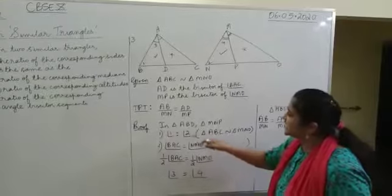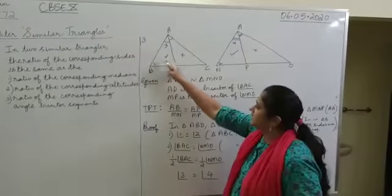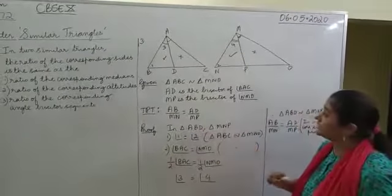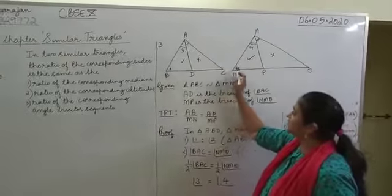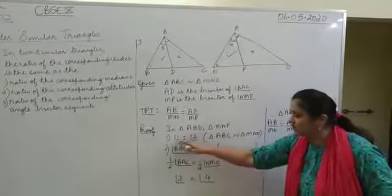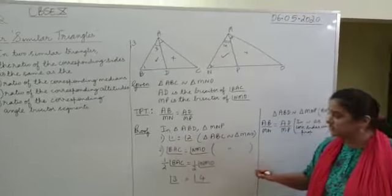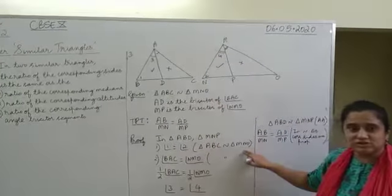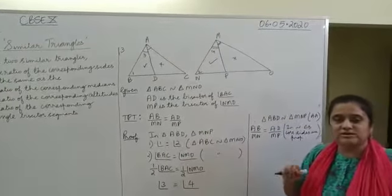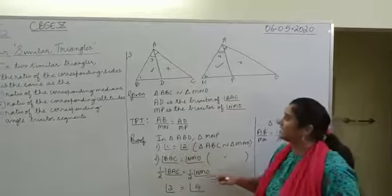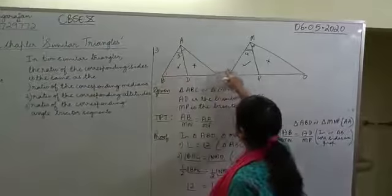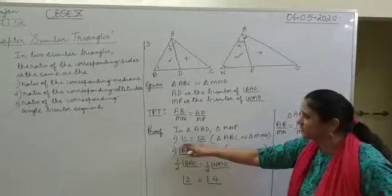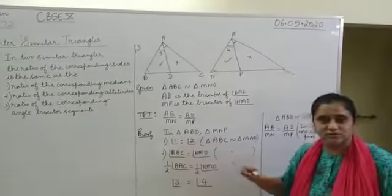Let's start with triangle ABD and triangle MNP. Here, angle 1 is equal to angle 2. Why? Because triangles ABC and MNO are similar to each other, and in two similar triangles, corresponding angles are equal. So angle B is equal to angle N, which means angle 1 is equal to angle 2.